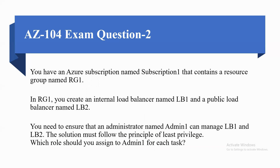Question two: You have an Azure subscription named Subscription 1 that contains a resource group named RG1. In RG1, you create an internal load balancer named LB1 and a public load balancer named LB2. You need to ensure that an administrator named Admin1 can manage LB1 and LB2. The solution must follow the principle of least privilege. Which role should you assign to Admin1 for each task?